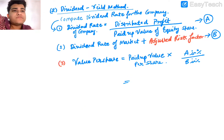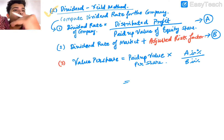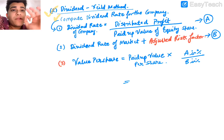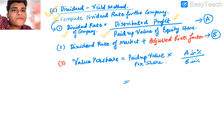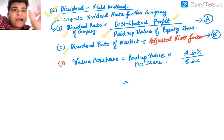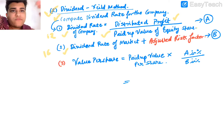The dividend yield method is based on the kind of dividend the company is paying. Step one: compute the dividend rate of the company — distributed profit divided by paid-up value of equity shares gives the company's dividend rate. Then we need to find the market dividend rate. For example, a company like Maruti or Tesla may have a dividend rate of 12%, while the market rate may be 16%.